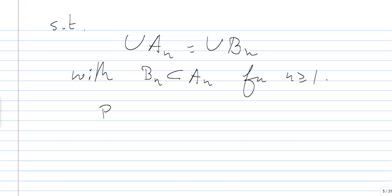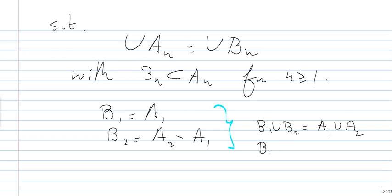So, how do we do this? So, first, you set B1 equals A1. And then, you take B2, which is A2 minus A1. So, what do we know? It's easy to see that B1 union B2 is exactly A1 union A2. And it's obvious that B1 is a subset of A1 and B2 is a subset of A2. And the intersection between B1 and B2 is the empty set.